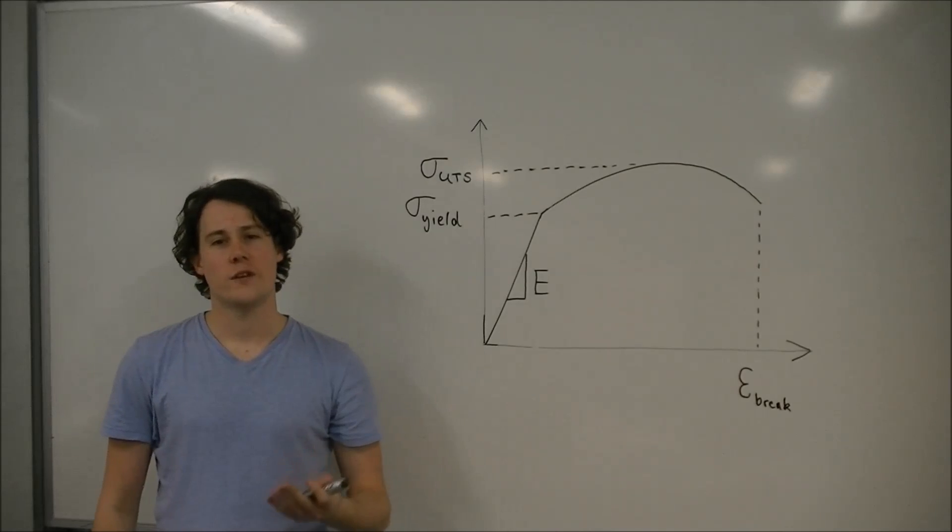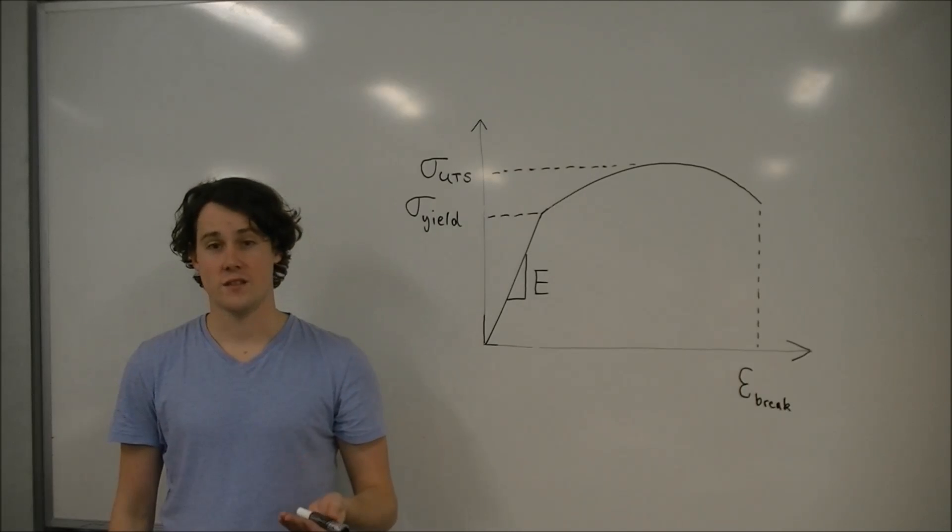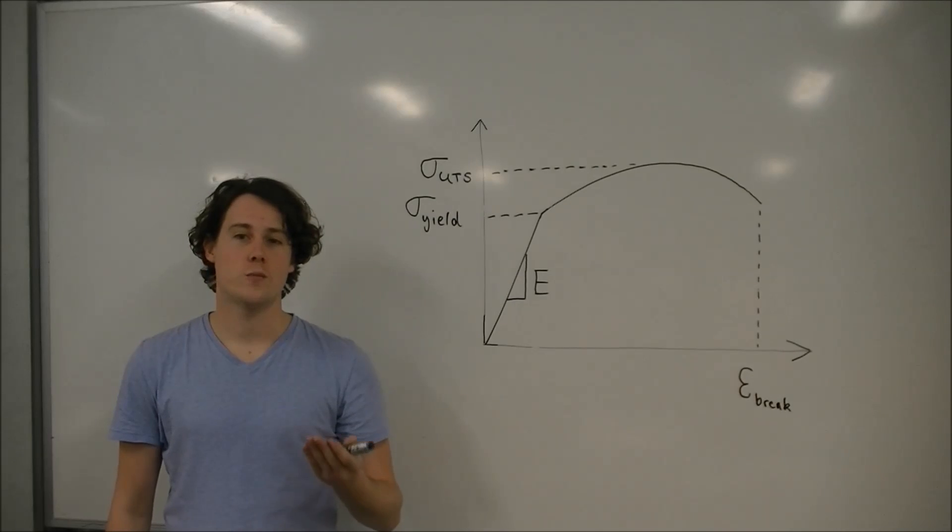So why does heat treating a metal change its strength, elongation to break and toughness but not its Young's modulus? Well what it all comes back to is what physical mechanisms are responsible for each property.